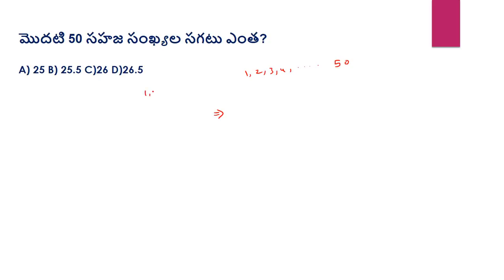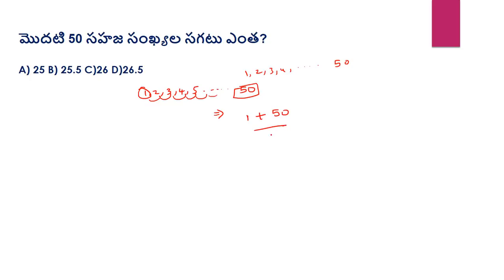Next question: 1, 2, 3, 4, 5 — we have 10 terms. The difference is the same. So first number plus last number divided by 2: 1 plus 10 divided by 2 equals 5.5. The answer is 5.5.